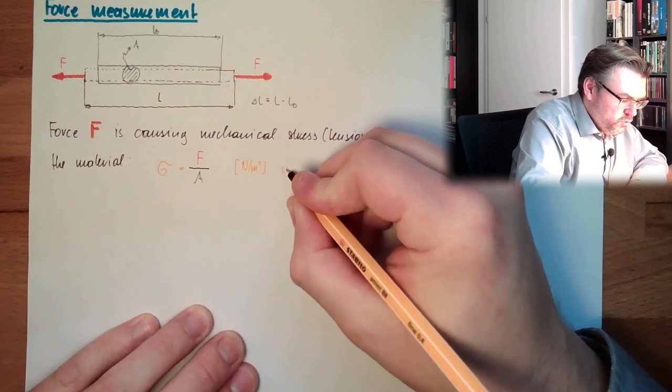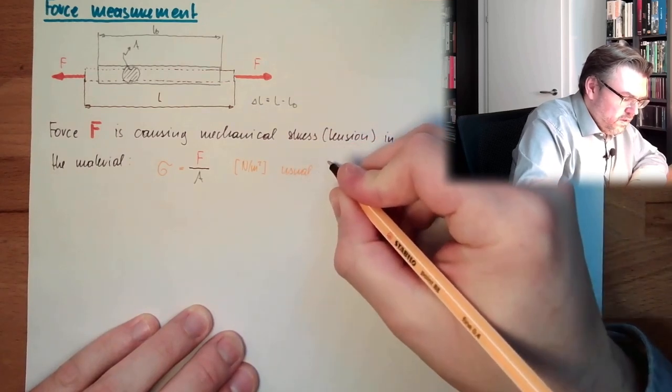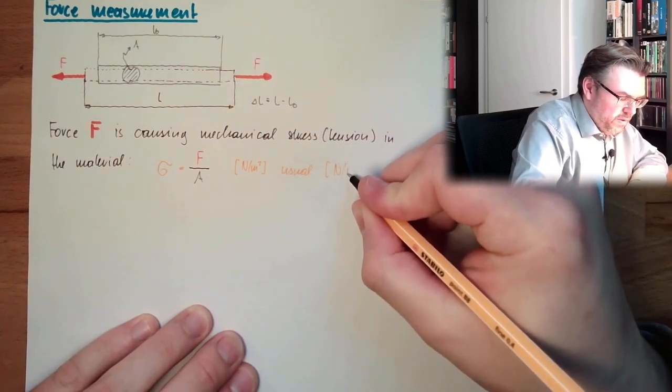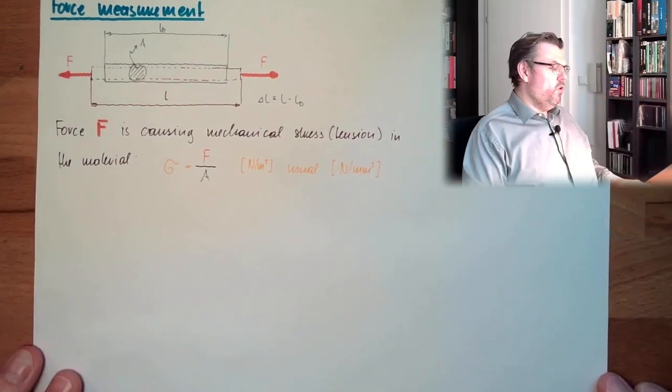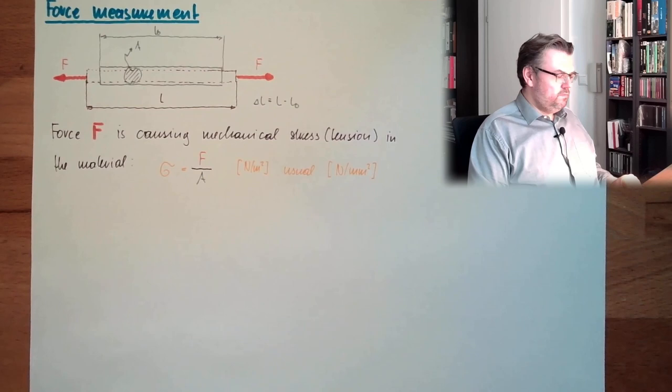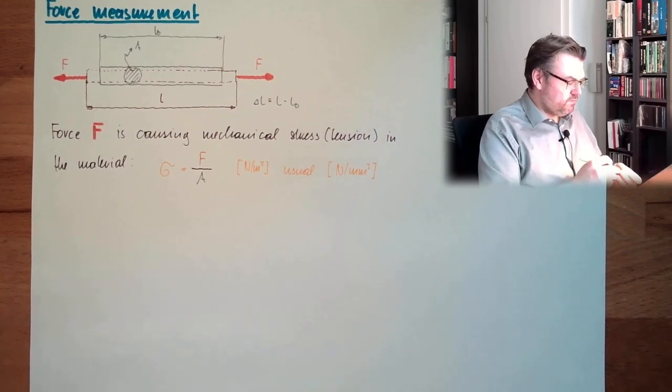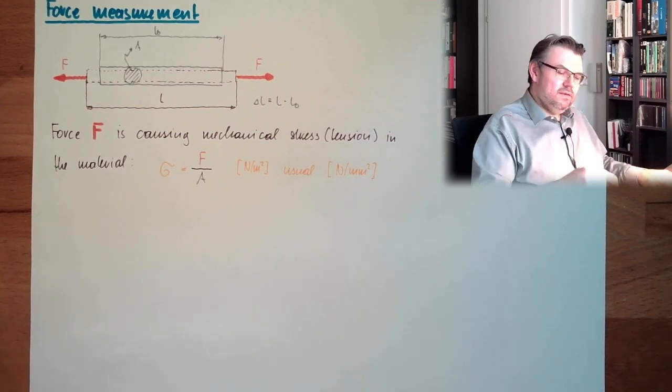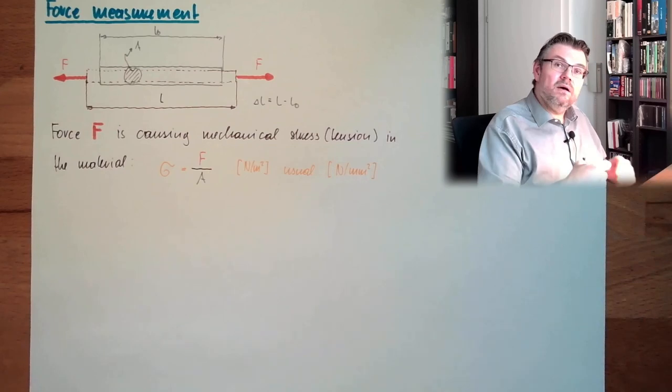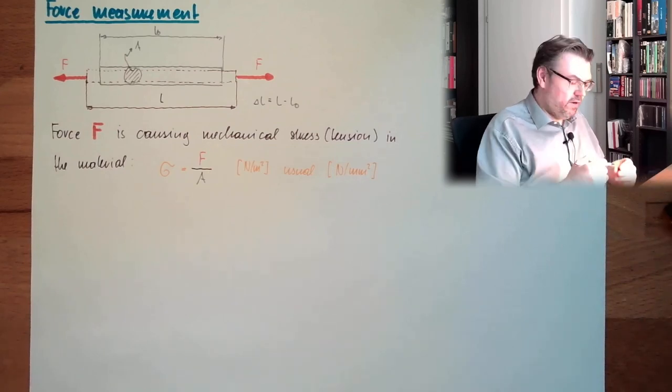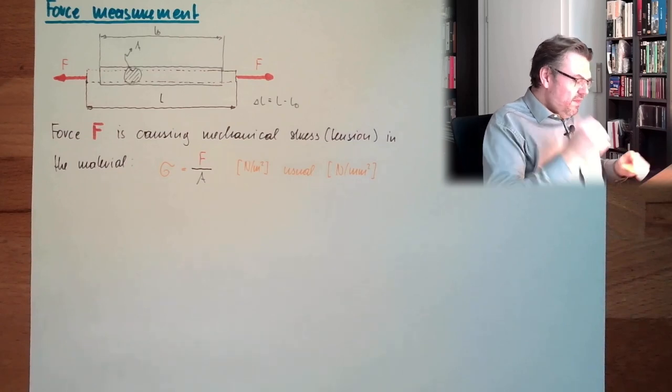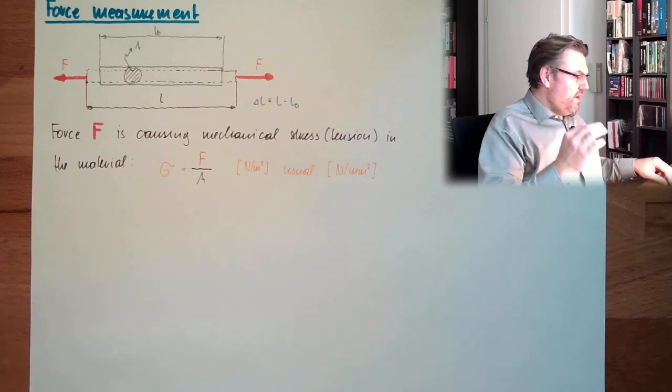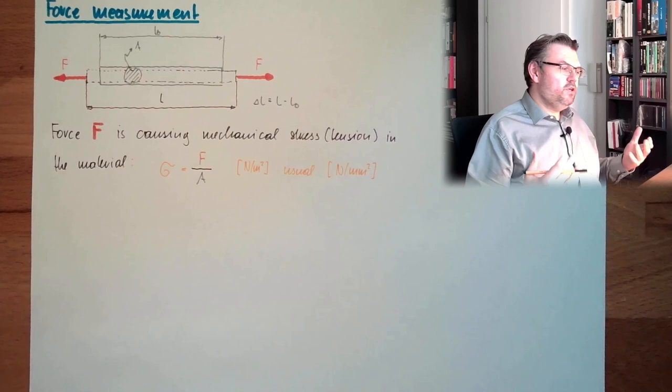So the unit of this thing is usually newton by square meter. However, the usual is newton by square millimeter because it's simply more often used. So this is the stress now. And stress, sigma is a Greek letter for S. This fits perfect. So this stress is then causing the material to change its form.